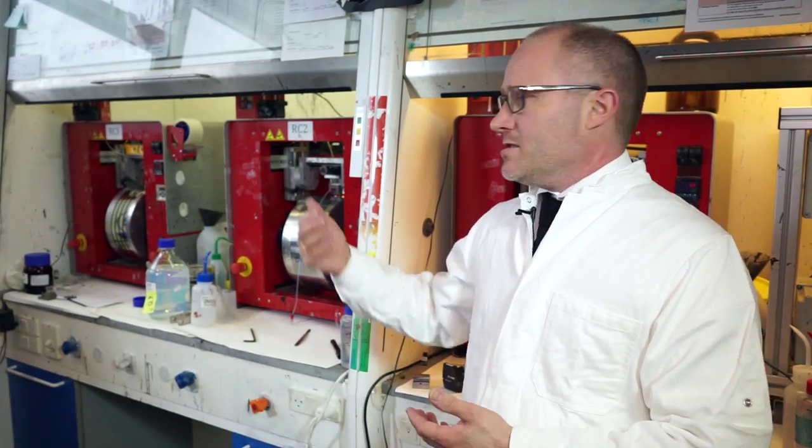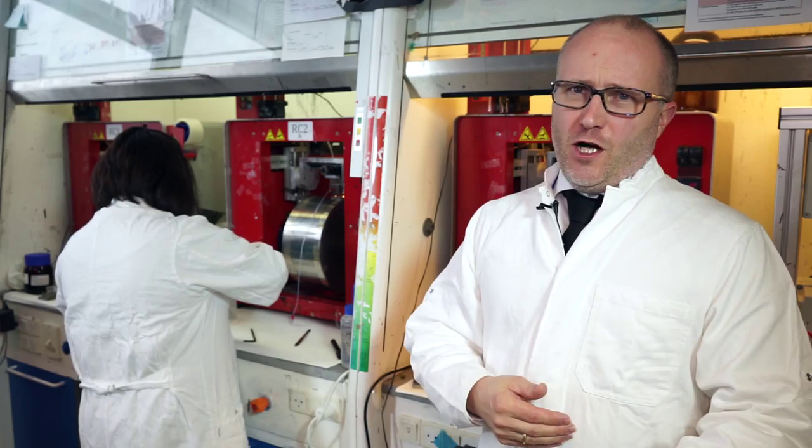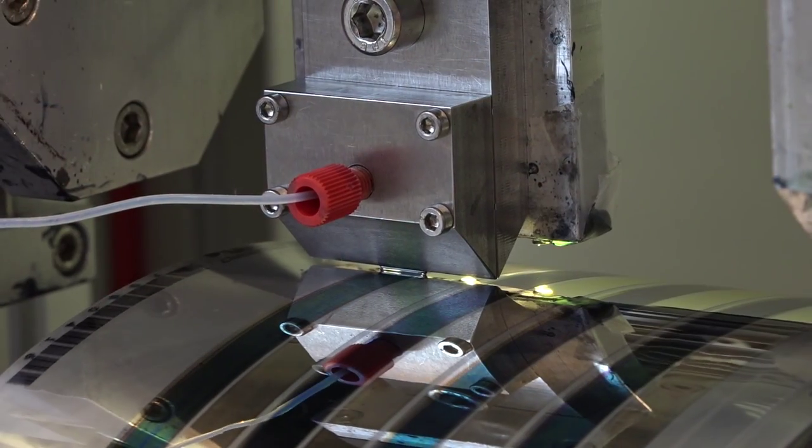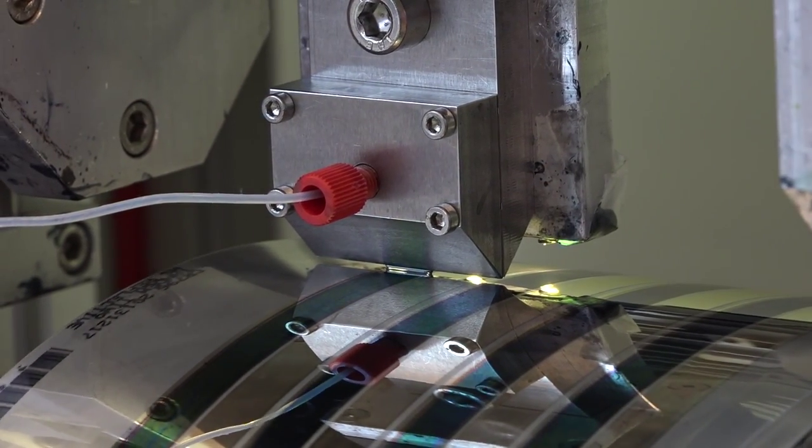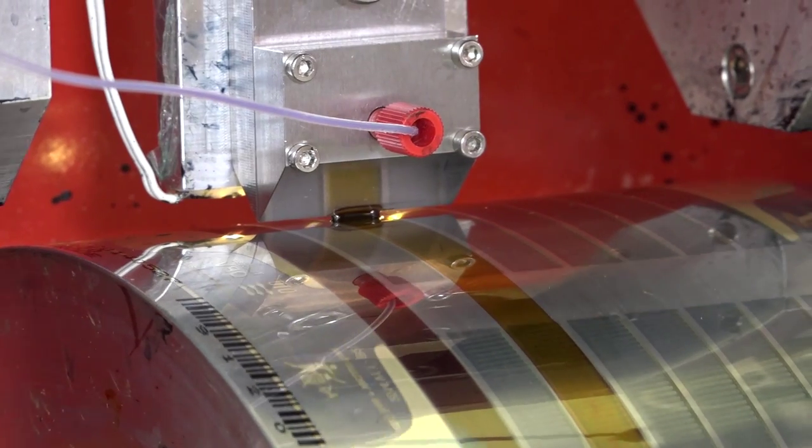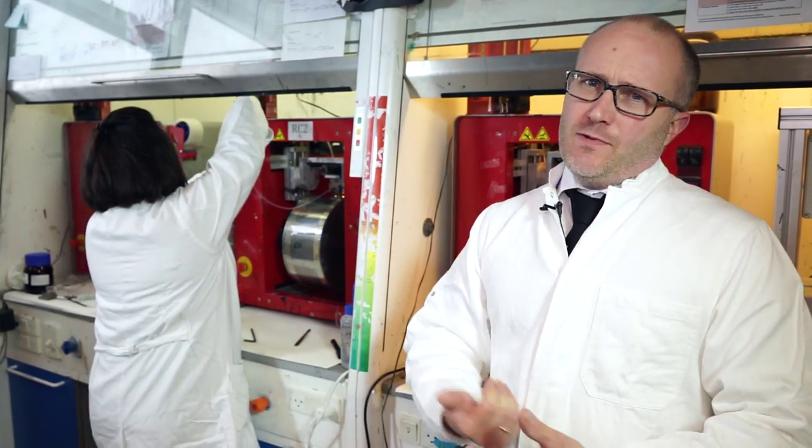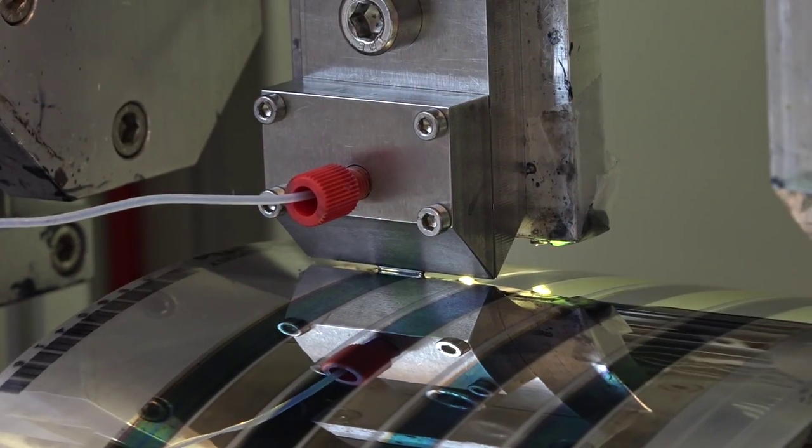And once the first junction, whether it's a low band gap junction in the reflective tandem device, or the wide band gap junction in the transmissive tandem device, we will need, after having slot die coded these active layers, we will need to apply the intermediate layer. This is a very critical layer.